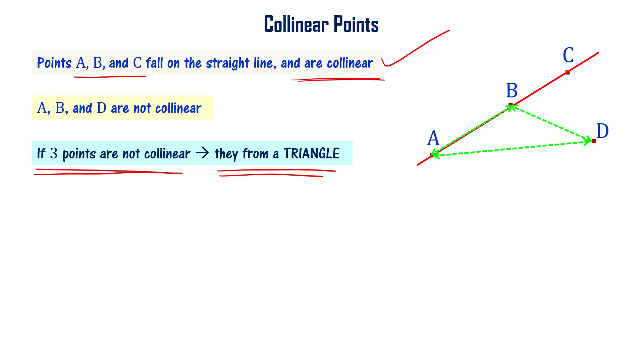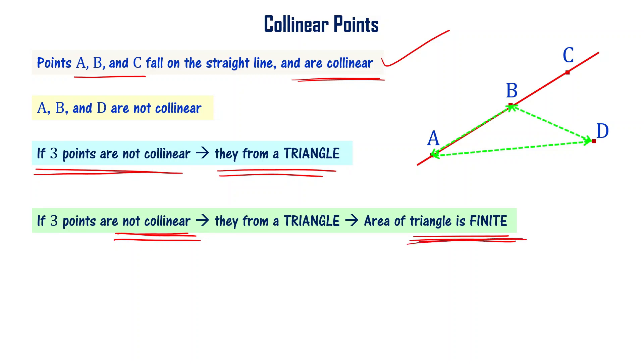If you compute area of the triangle, if points are not collinear, area of the triangle will be some finite value as the area of the triangle, like one centimeter square, two centimeter square, 10.5 centimeter square, some non-zero area. If three points are not collinear, then you will get area of the triangle as non-zero number. If you calculate area of the triangle using three collinear points, area is going to be zero.